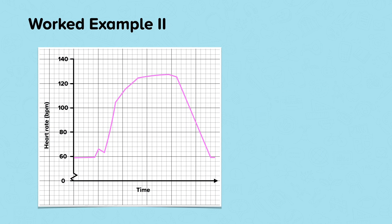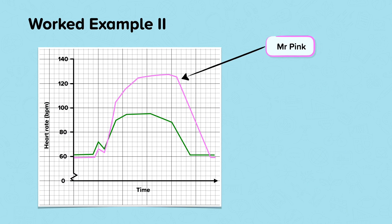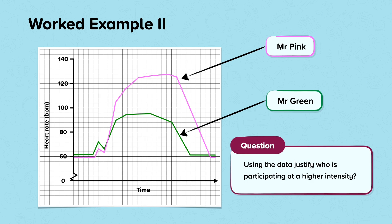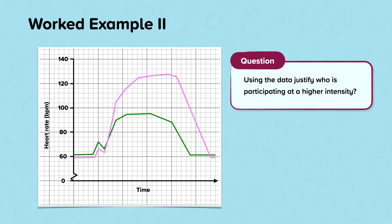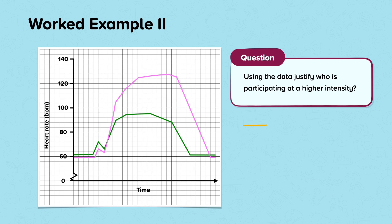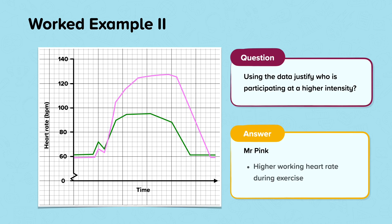Here is a graph showing the heart rate of Mr Pink and Mr Green. This is their heart rate before, during and after participating in different physical activities. Mr Pink's heart rate is represented by the pink line on the graph and Mr Green's heart rate is represented by the green line on the graph. Consider this question: using the data, justify who is participating at a higher intensity. Despite having very similar resting heart rates, during exercise Mr Pink's heart rate is greater than Mr Green's heart rate, suggesting Mr Pink is working at a higher intensity than Mr Green.